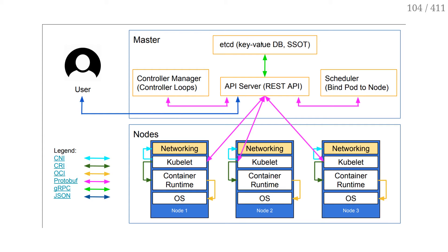Instead of being like a primary-secondary setup, where when the primary goes down there is a transition period where you promote the replica and eventually you can run again — in the case of etcd, if I have a three-node etcd cluster, I can lose a node at any time, and the other nodes continue to work without me having to do anything, as long as I have a majority of nodes still available.